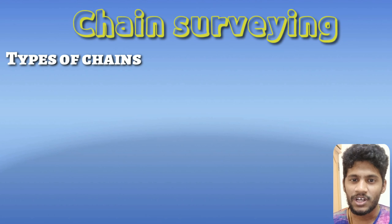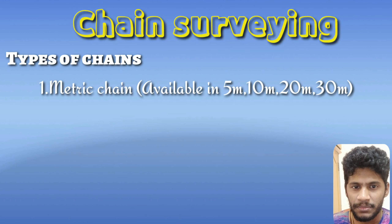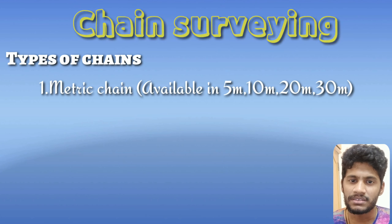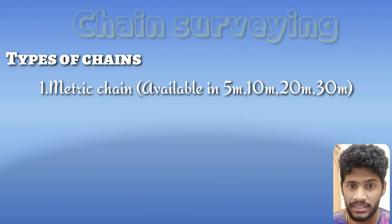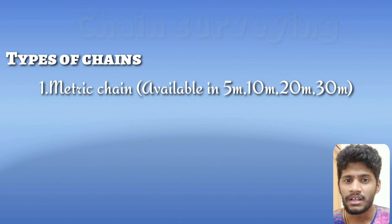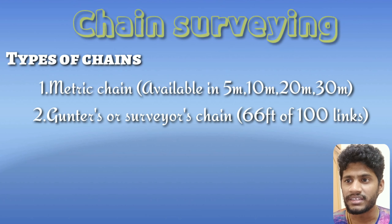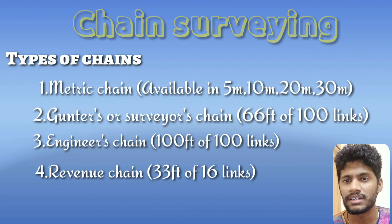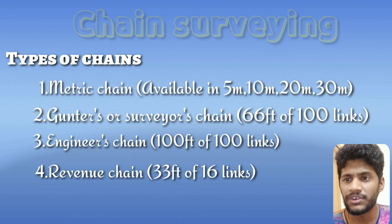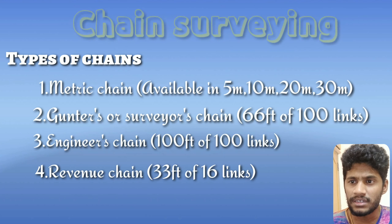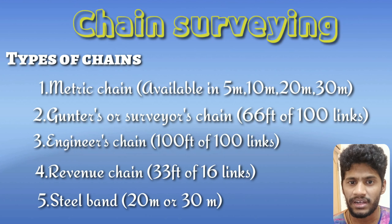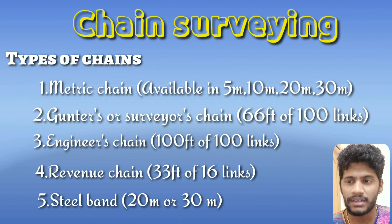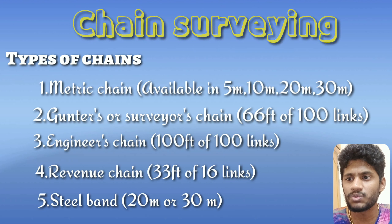The metric chain is available in 5 meters, 10 meters, 20 meters, and 30 meters. We also have Gunter's chain and revenue chain — the Gunter's chain total length is 66 feet of 100 links, and the engineer's chain has 100 feet of 100 links. The revenue chain has a total length of 33 feet with 16 links. Finally, the steel band is similar to the metric chain at 20 or 30 meters in length.